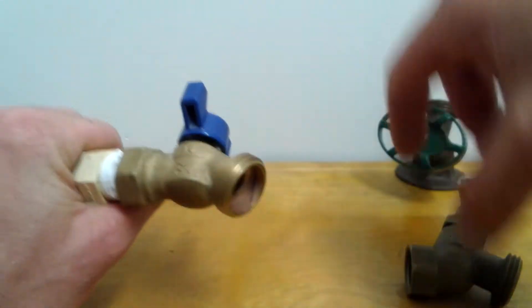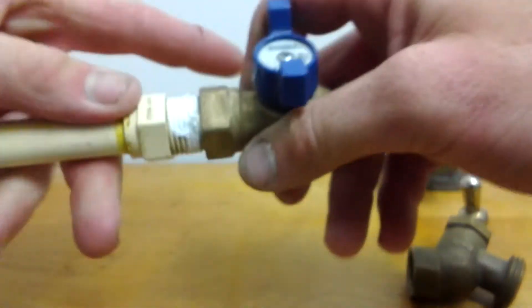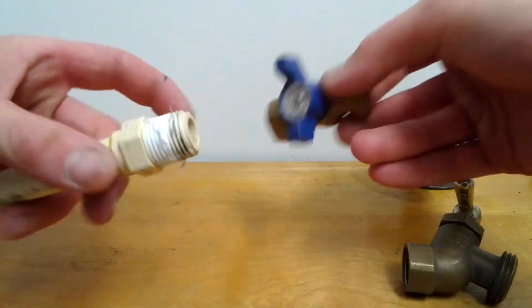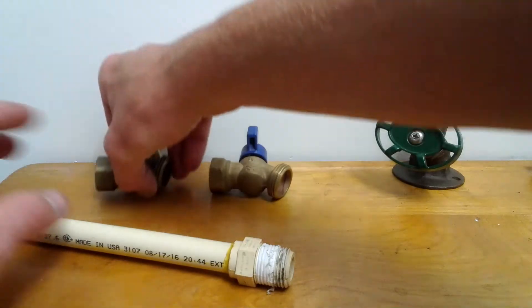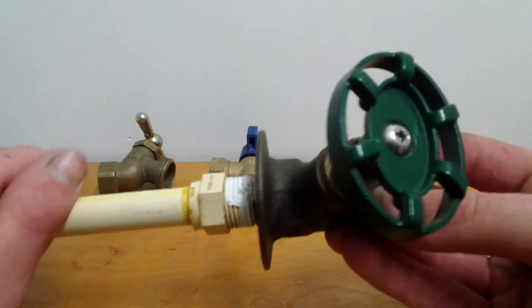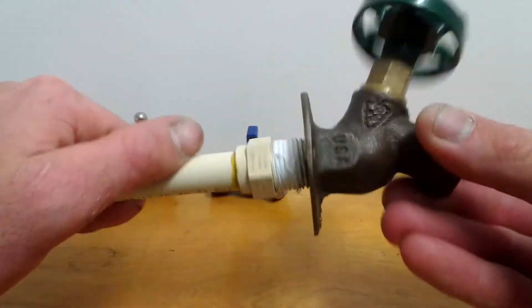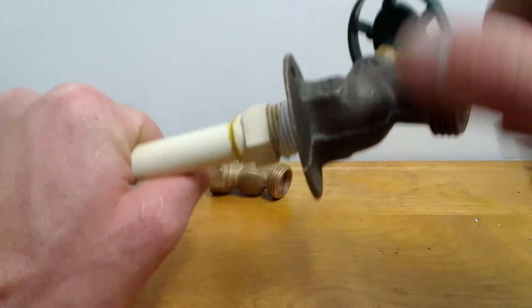You just thread it on there like that and it's very very simple. Now you're going to find a lot of CPVC in a lot of manufactured homes but you could also thread this arrowhead silcock or sill faucet onto here.